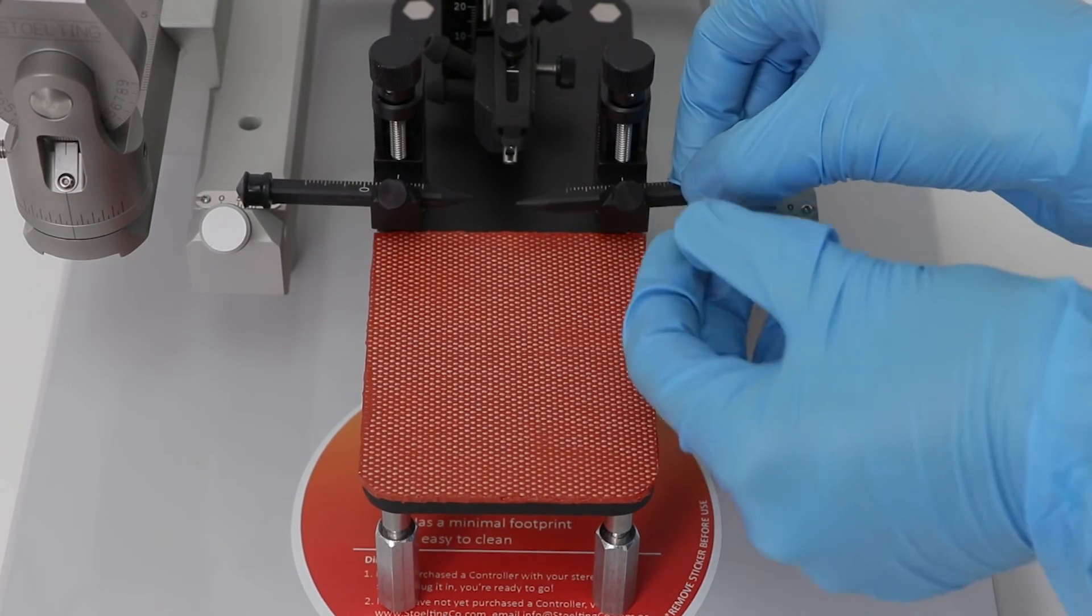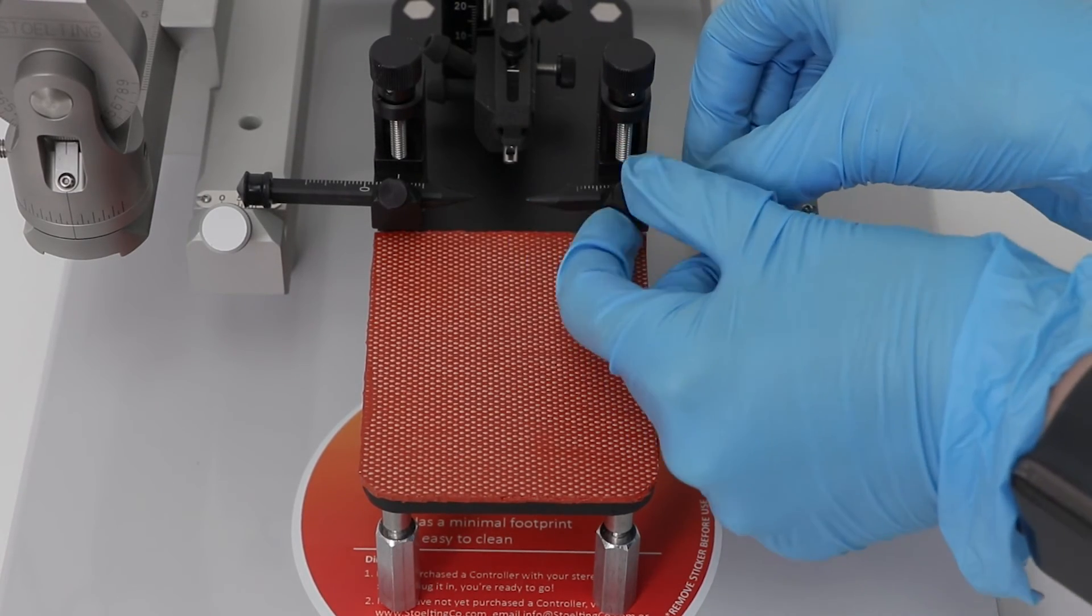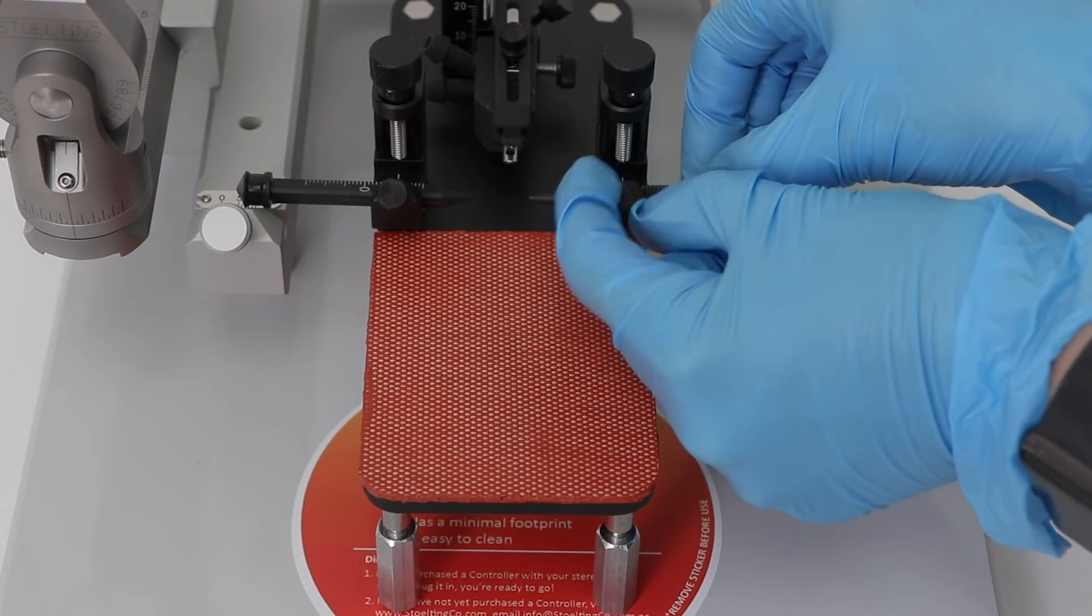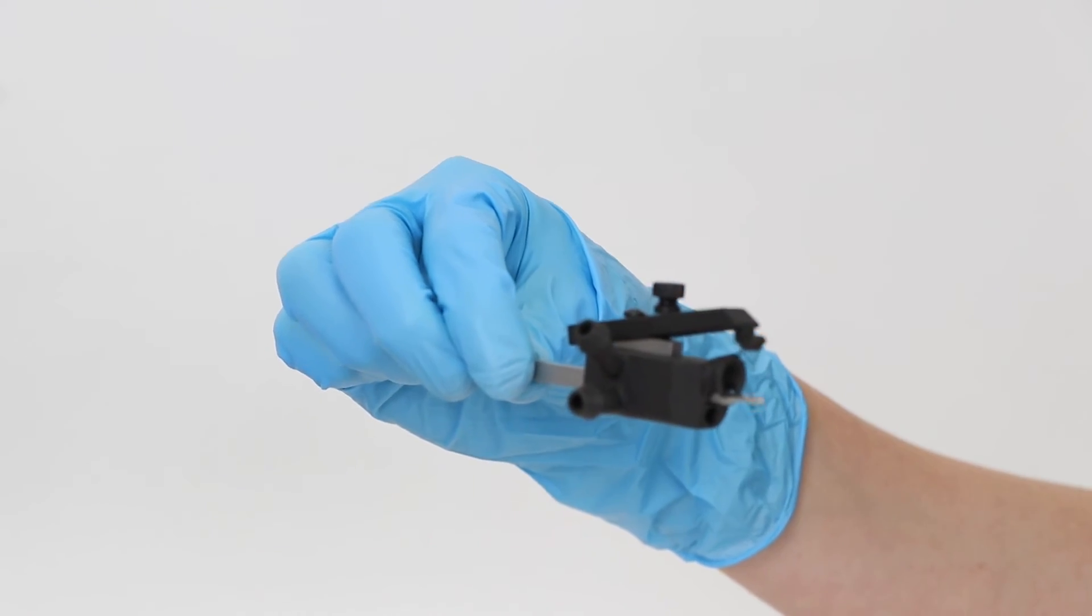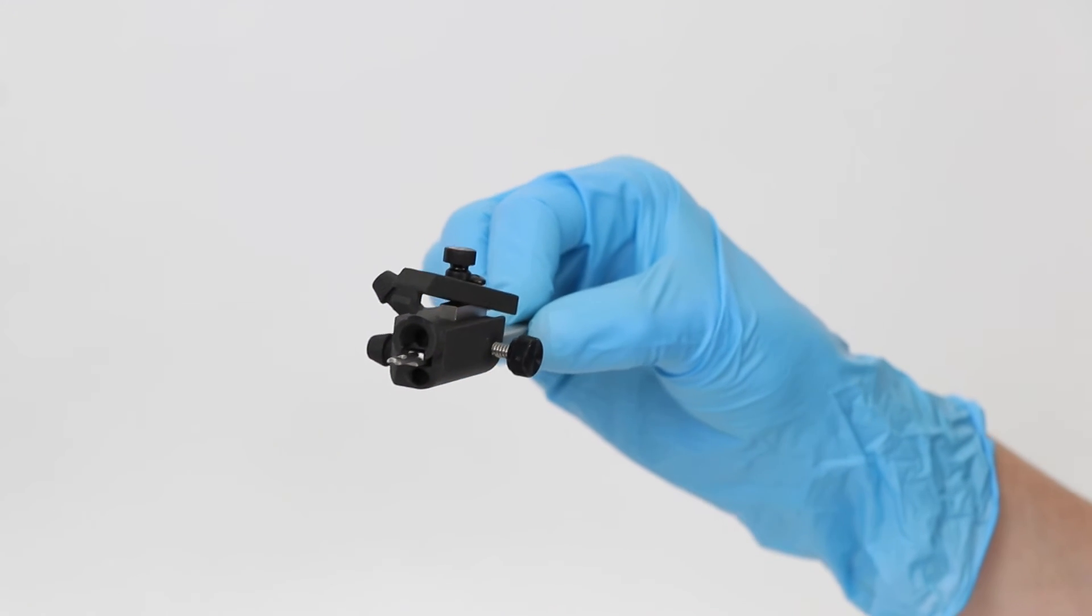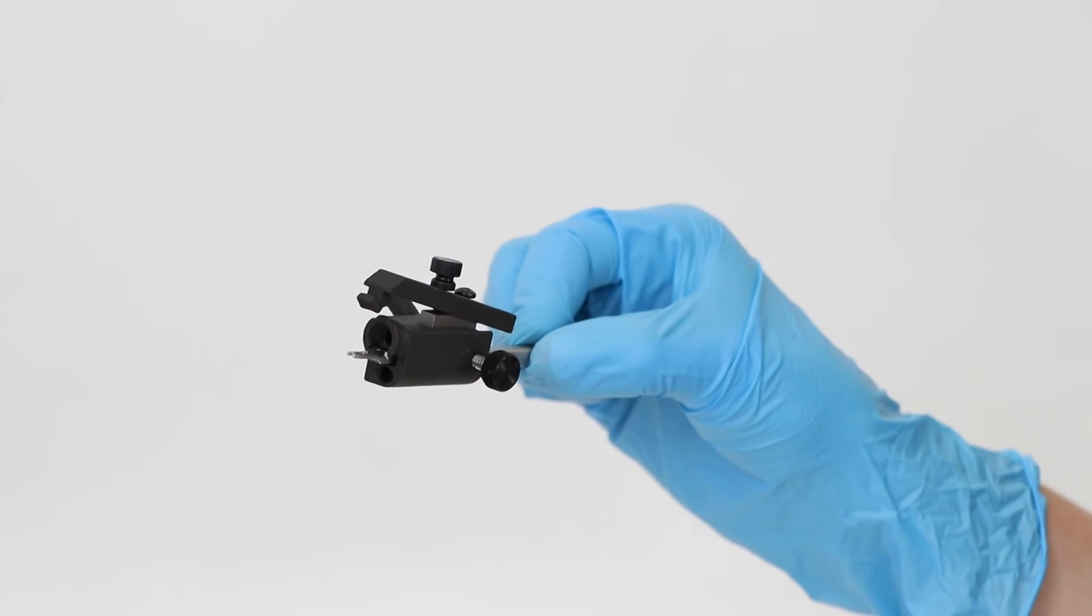Next, take the mouse ear bars and secure them in the corresponding brackets. Then secure the mouse anesthesia mask with the integrated adapter to the base accordingly.